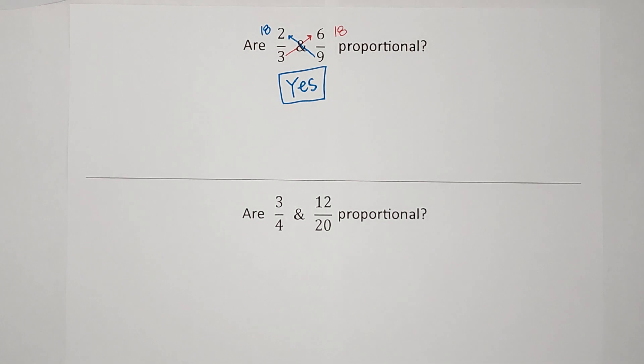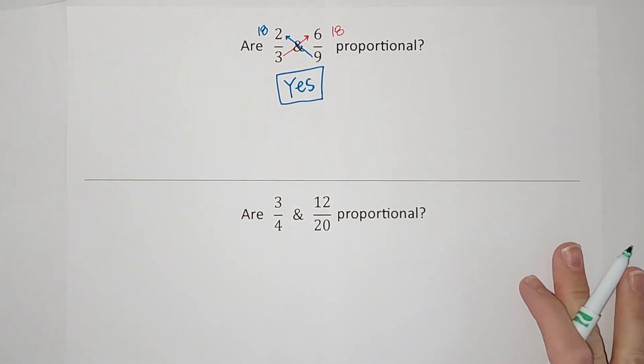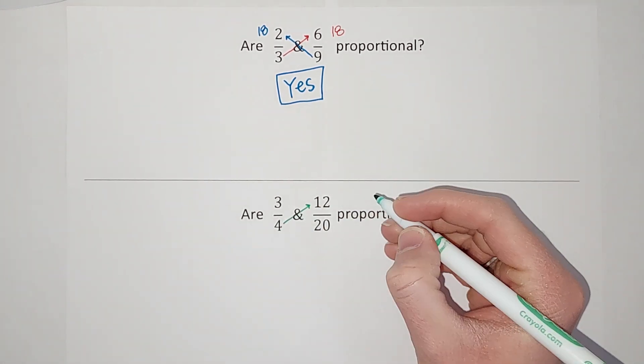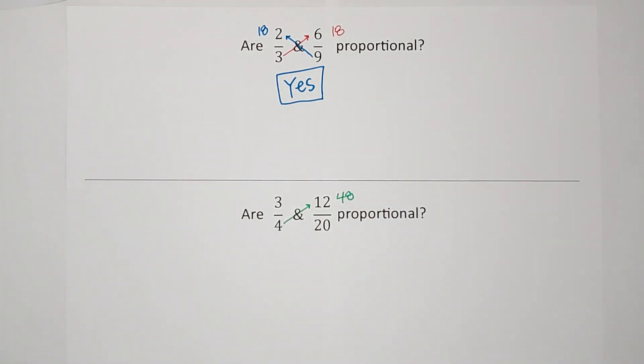Let's take a look at this one as well. Are three-fourths and twelve-twentieths proportional? We're going to go from the 4, multiply the 12, that gives me 48.